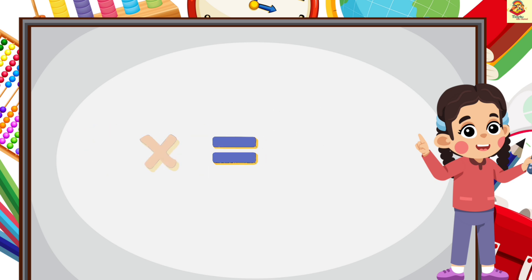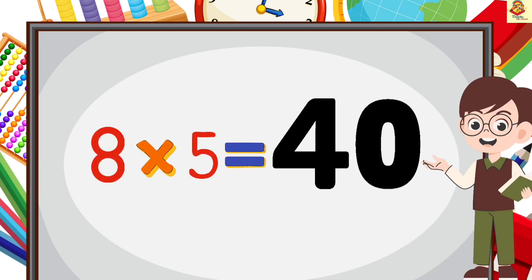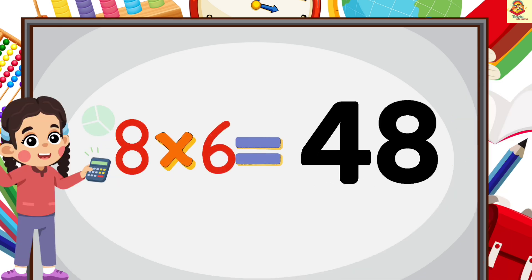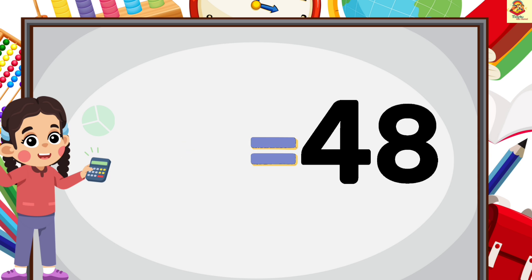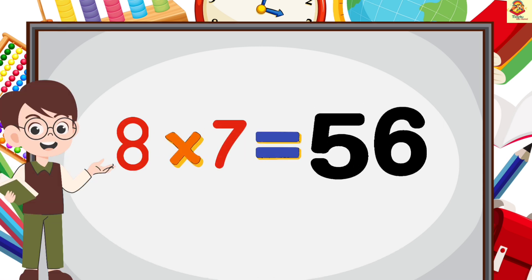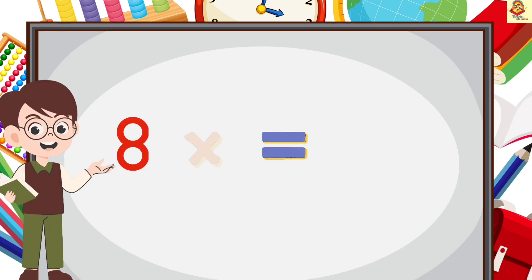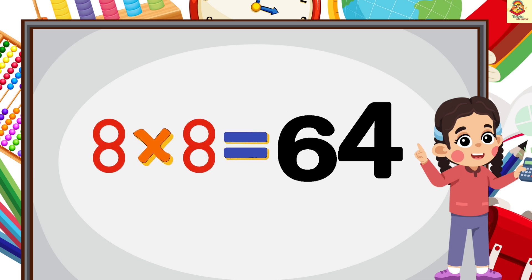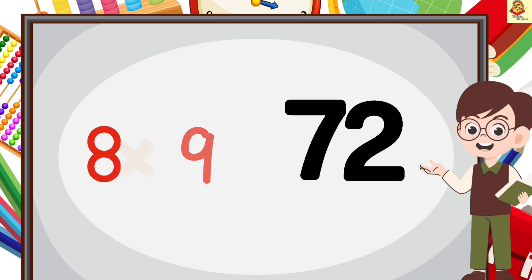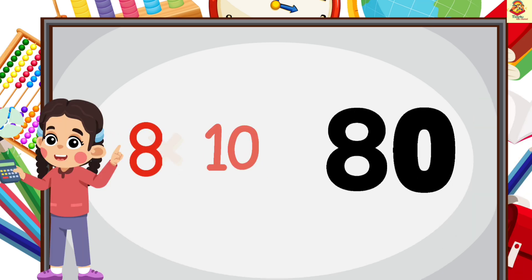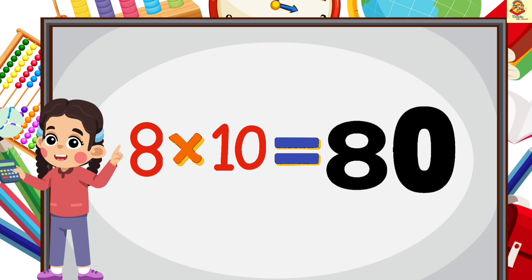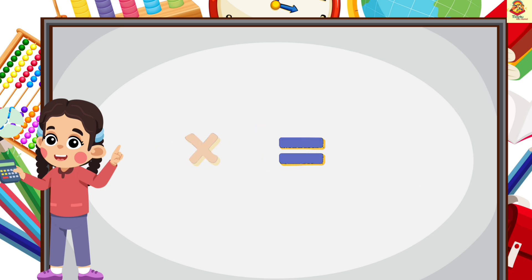8 4's are 32, 8 5's are 40, 8 6's are 48, 8 7's are 56, 8 8's are 64, 8 9's are 72, 8 10's are 80.